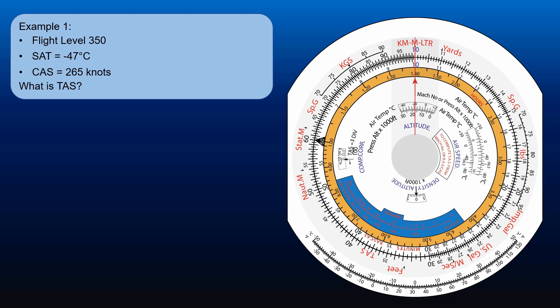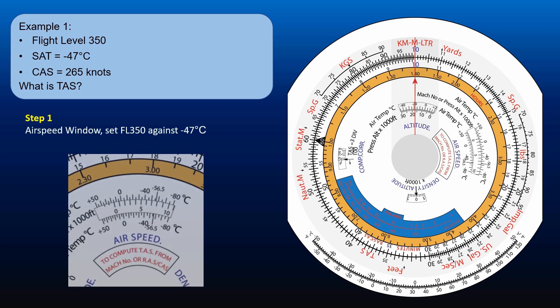Start by converting CAS to TAS in the usual ways. First step: In the airspeed window, set flight level 350 against minus 47 degrees Celsius.